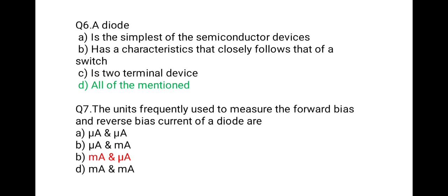The next question is: the units frequently used to measure the forward bias and reverse bias current of a diode are — and the correct option is milliampere and microampere. When a diode is connected in forward bias, maximum current flows and is measured in milliamperes. When connected in reverse bias, leakage current flows and is measured in microamperes.